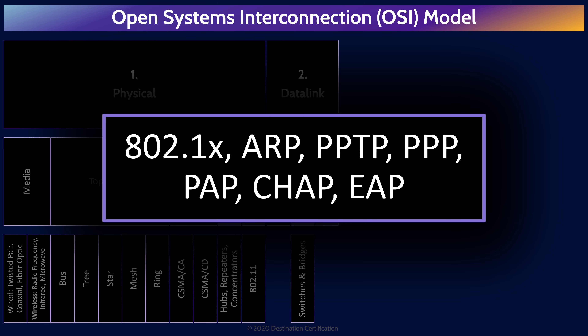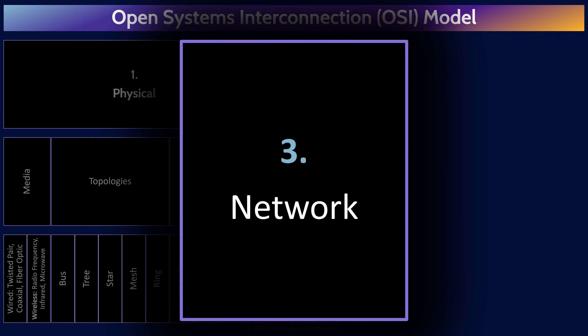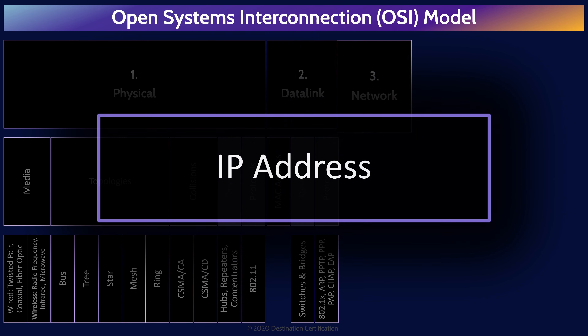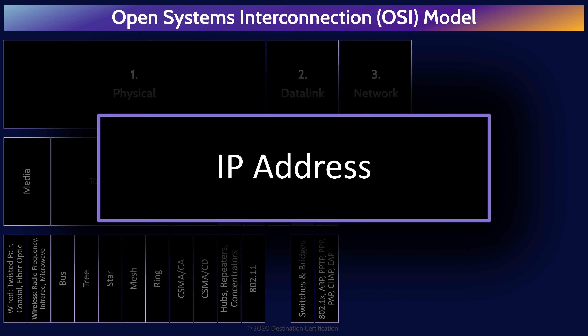Next layer up is Layer 3, the Network Layer, responsible for logical addressing, routing, and delivery of datagrams. It is at Layer 3 that we have the crucially important Internet Protocol IP addresses. IP addresses are much like your postal address — if anyone wants to mail you a letter from somewhere on the planet, they need your postal address: your country, province or state, city, street, and house number, so a letter can be routed to your specific mailbox. IP addresses serve the same function on networks, identifying a specific system and allowing packets to be routed across local area networks and even across the internet.